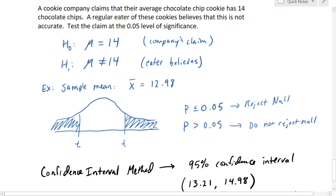So that is a quick overview of what a hypothesis test looks like. In the videos that follow, we will look at each of the specific types of hypothesis tests and how to find the test statistic and the p-value for each using the graphing calculator.